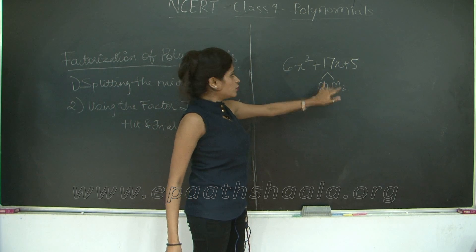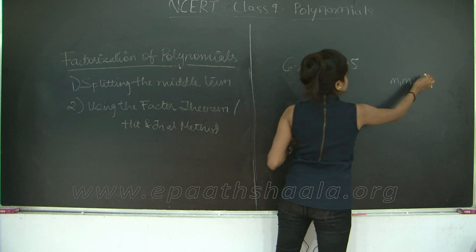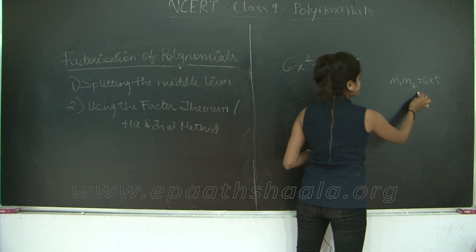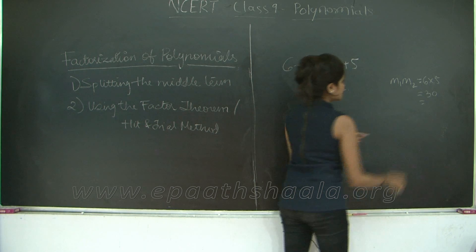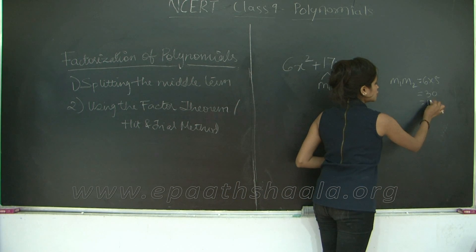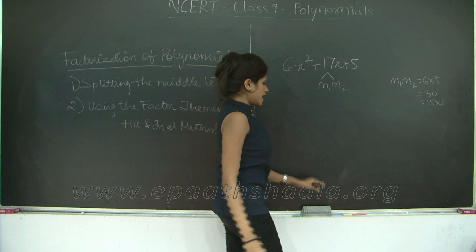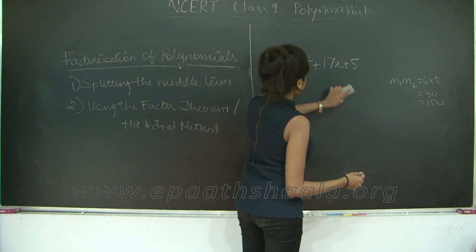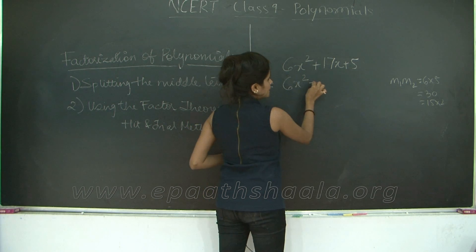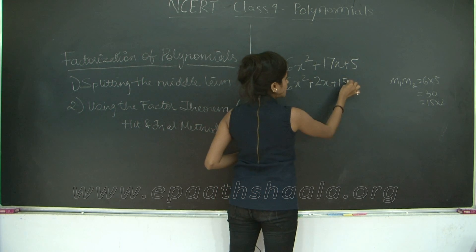And m1 plus m2 will give you 17. So m1 into m2 equals 6 into 5, which is 30. Now 6 and 5 will not sum up to 17. How about 15 and 2? So 15 into 2 gives you 30, and 15 plus 2 gives you 17. So we rewrite the polynomial as 6x squared plus 2x plus 15x plus 5.